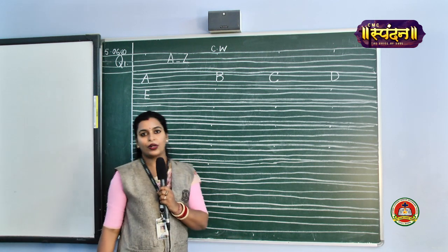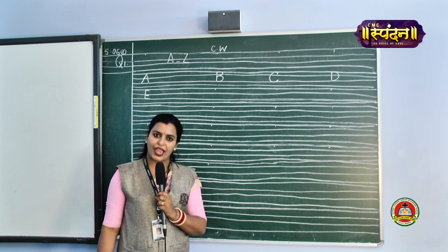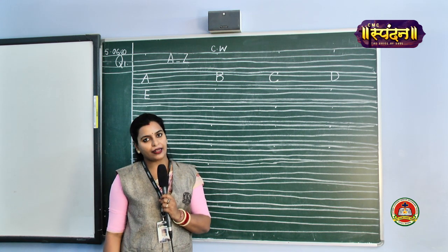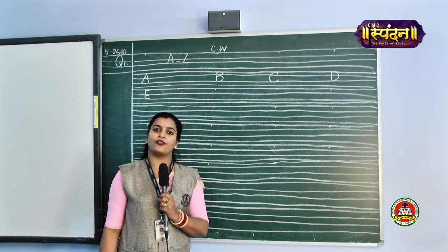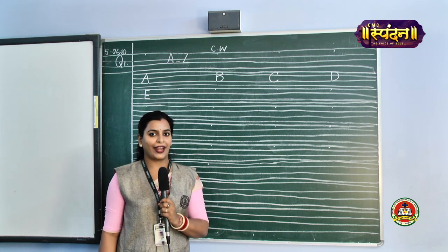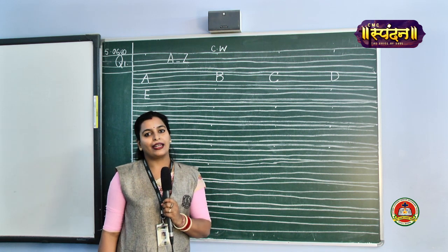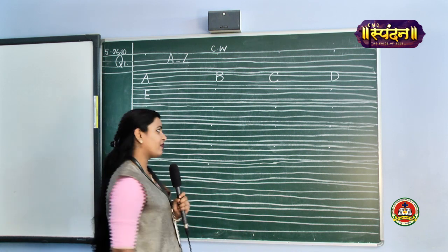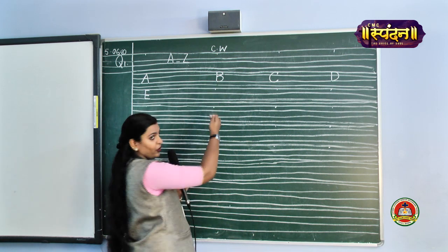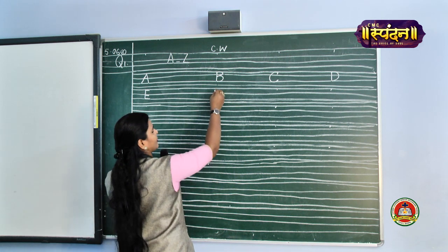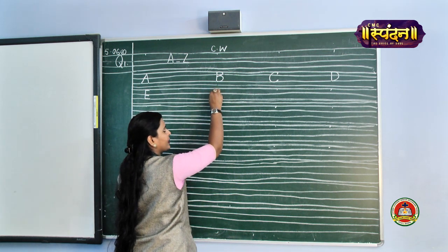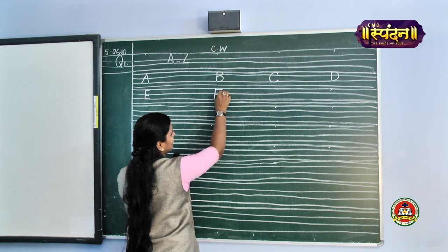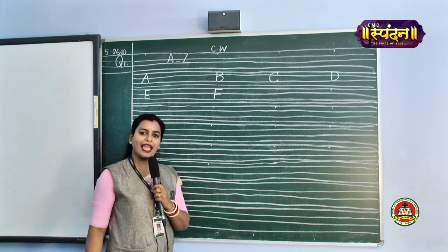Alphabet F. F stands for fish, F stands for fan, F stands for frock, and F stands for your friend too. So our next alphabet is alphabet F. Come on, let us write alphabet F just below alphabet B. Start from the pink line, bring it to the black line and make two sleeping lines again. This is alphabet F.